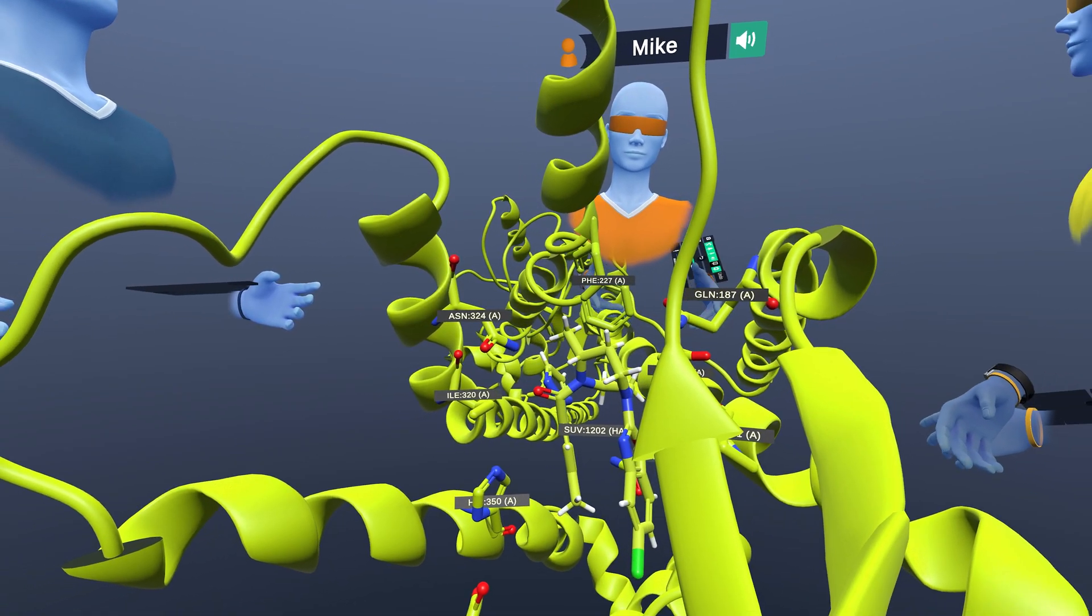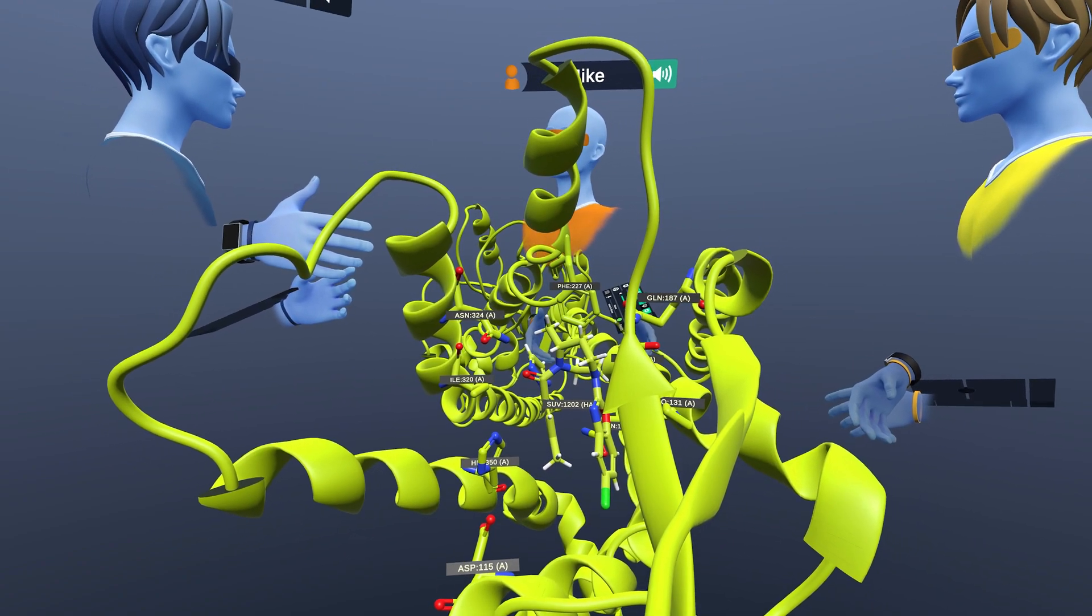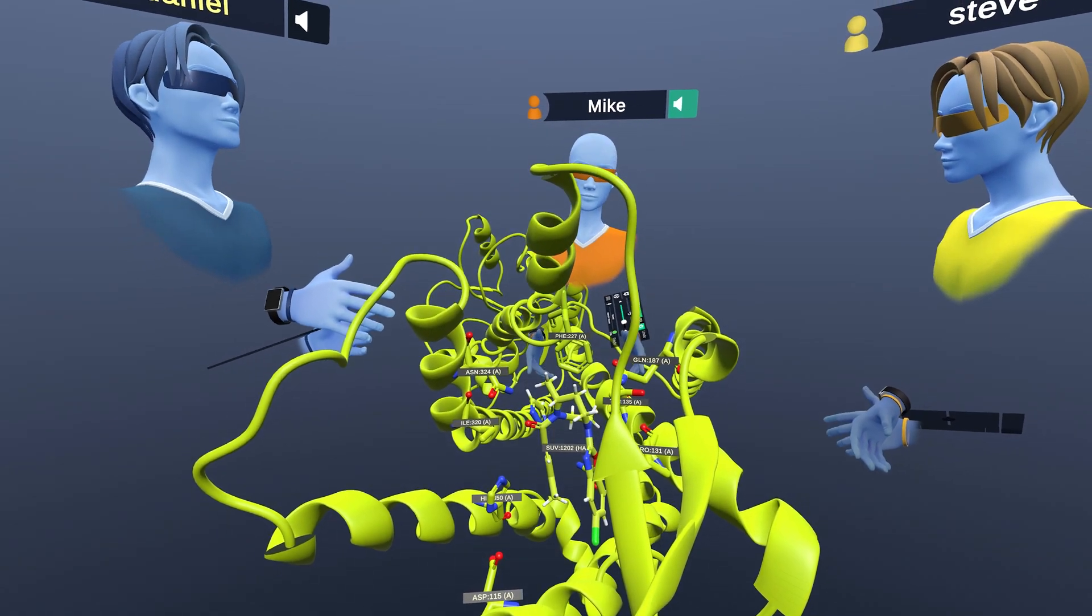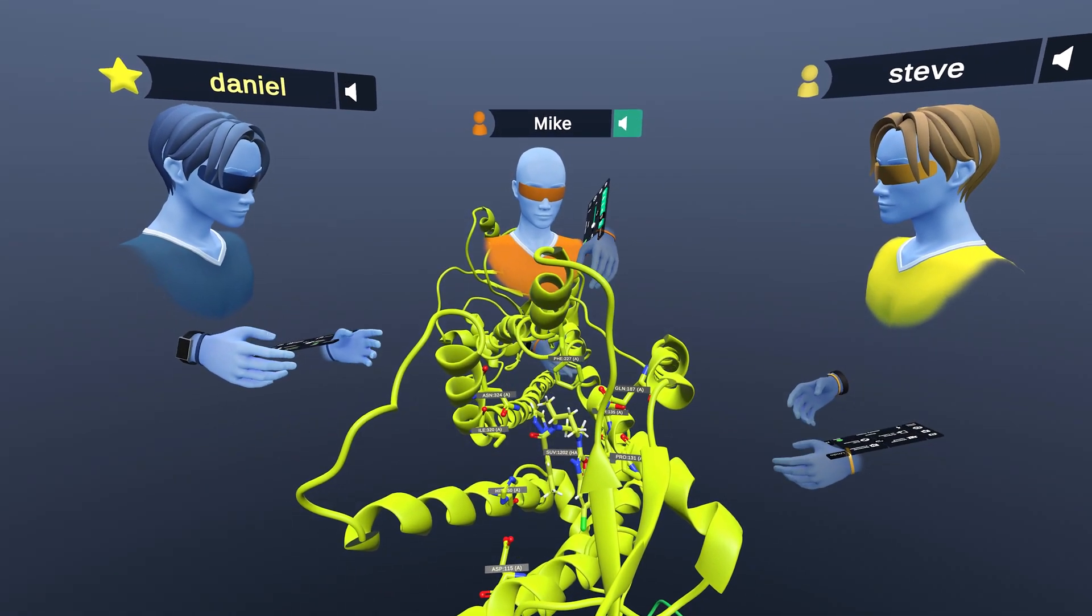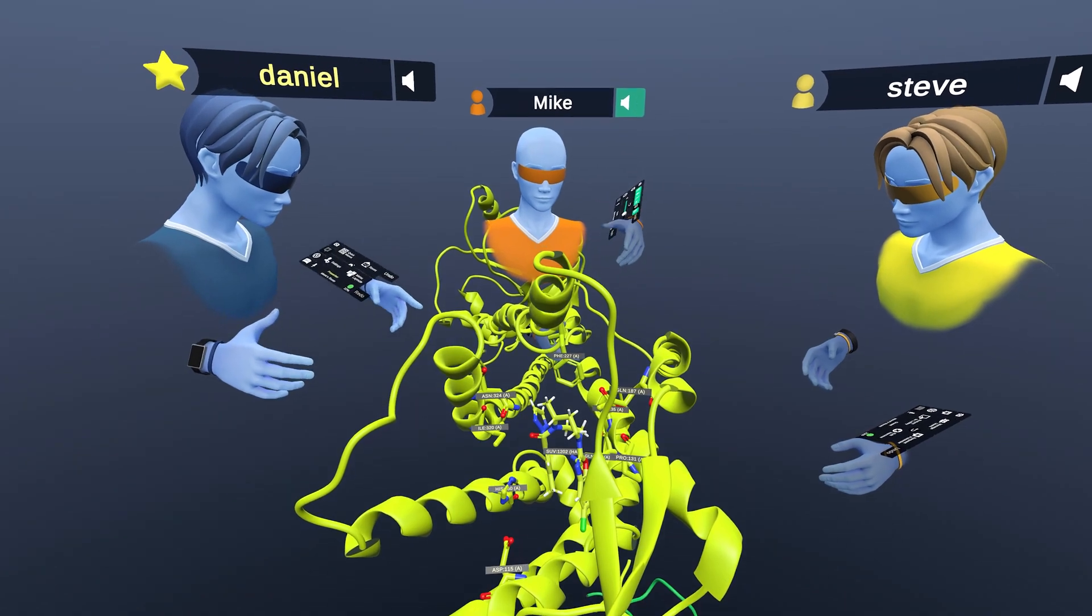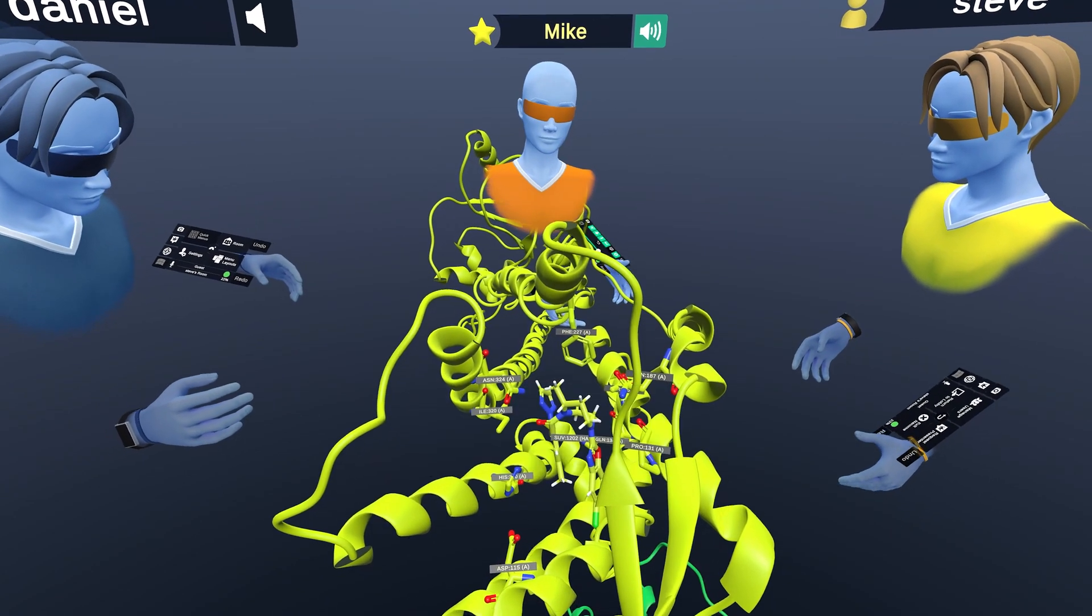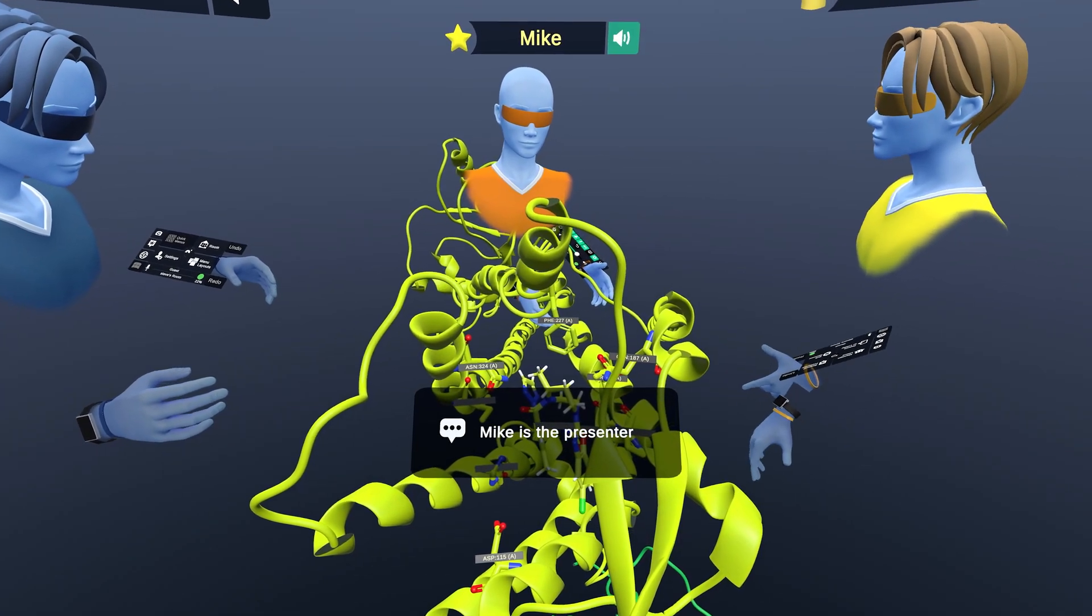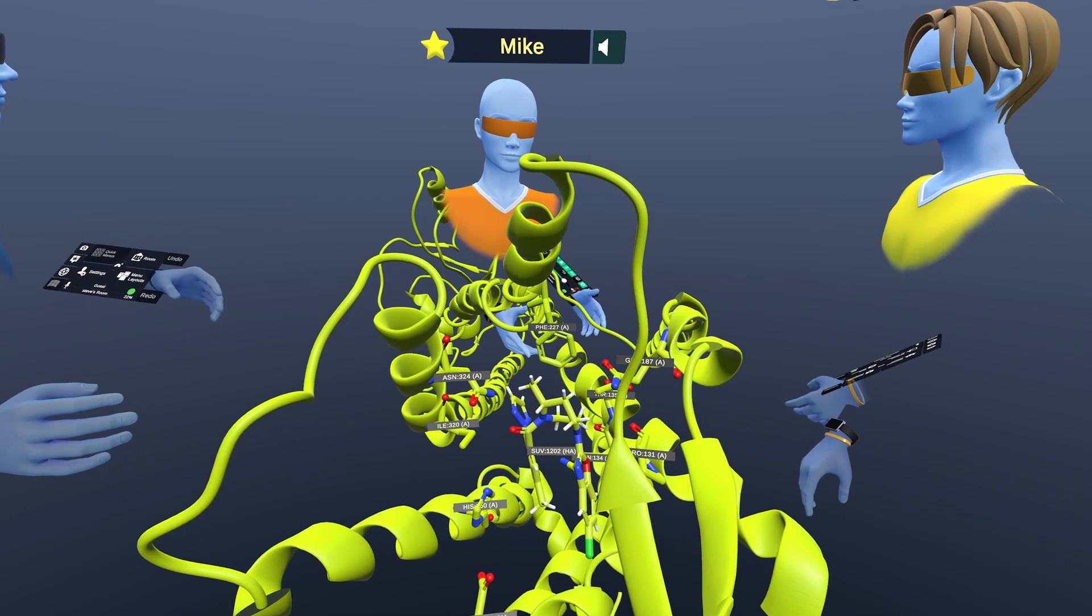And so people have known for quite a while now that the orexin system might be useful for medicines both to treat narcolepsy, but going the other way with antagonists, maybe to treat insomnia in conditions where people can't sleep. And so the drug we're going to be looking at today here in the orexin receptor is called suvorexant. It's actually a drug developed by Merck for insomnia. It's on the market now. And there are other similar drugs that are in the clinic or coming to market.